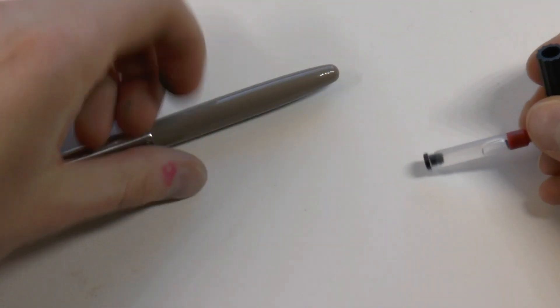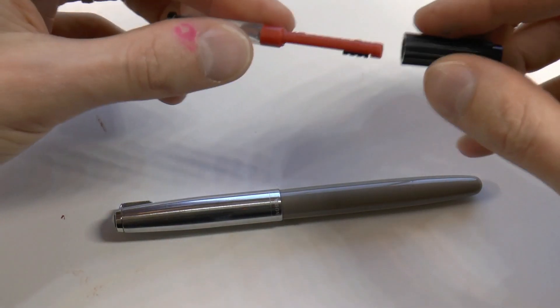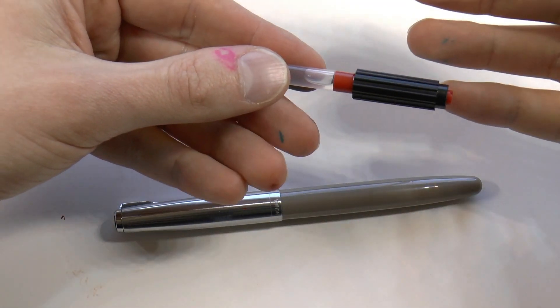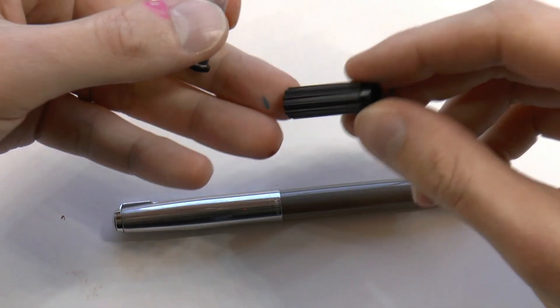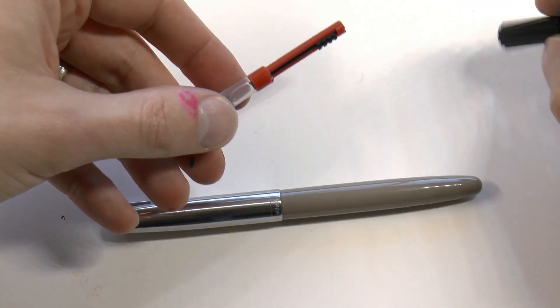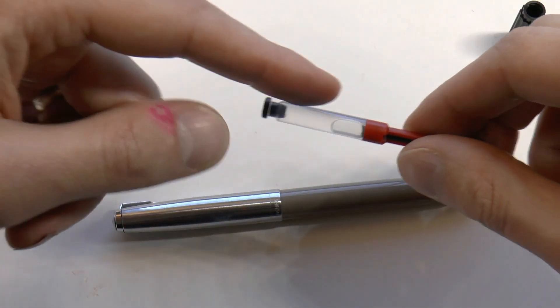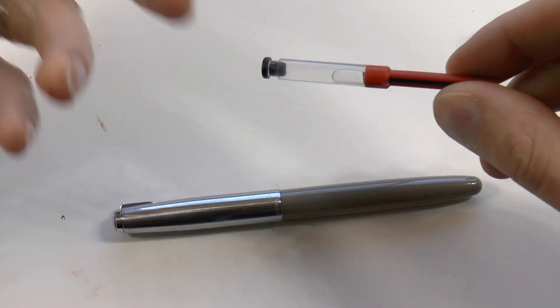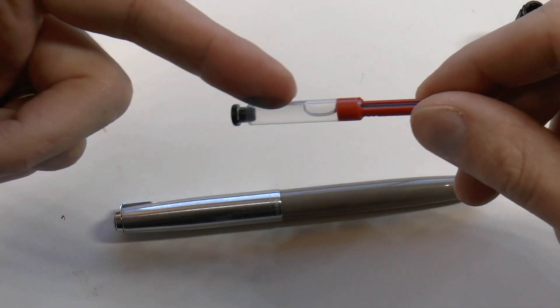Now this pen actually comes with a little bit of joy itself. You see, you get these little tools with it, which is exactly what you need. So here you've got a little disassembly tool for the vacuum unit. And then here you have a wee bit of silicon grease. That's one way to use a converter.